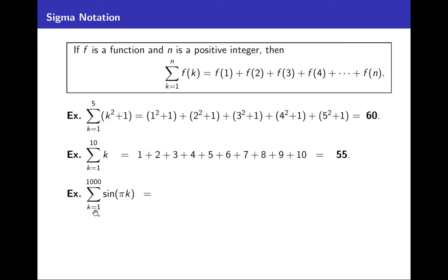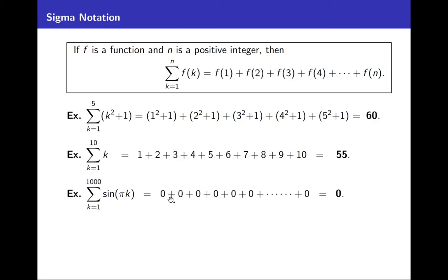How about the sum from k = 1 to 1000 of sin(πk)? That's a lot of terms, but it's actually simple. Whatever integer k is, πk is an integer multiple of π, and sine of that is zero. So this is sin(π) + sin(2π) + sin(3π) + ... + sin(1000π) — every term is zero — so you're just adding zero to itself a thousand times, giving zero.